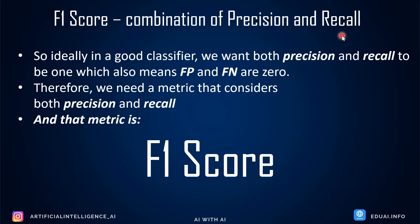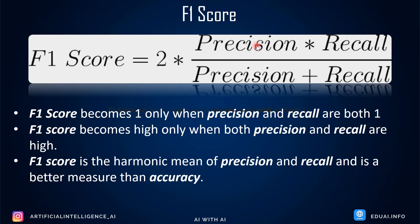The F1 score equation is: F1 = 2 × (Precision × Recall) / (Precision + Recall). It is the harmonic mean of precision and recall. F1 score will be high only if both precision and recall are high — if either one is low, F1 will be pulled down. This makes it a better measure than accuracy for imbalanced datasets.